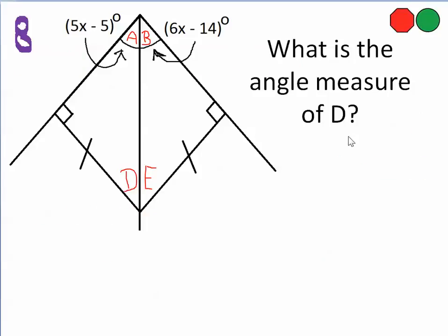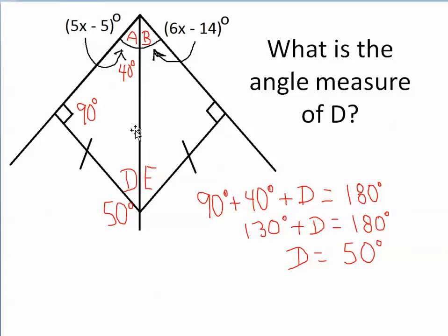Number 8 asks for the measure of angle D. We know the internal angles of all triangles total 180 degrees. We know one angle is 90 degrees and another is 40 degrees, so the missing angle is 50 degrees, because 90 plus 40 plus 50 equals 180 degrees.